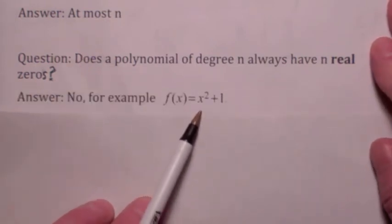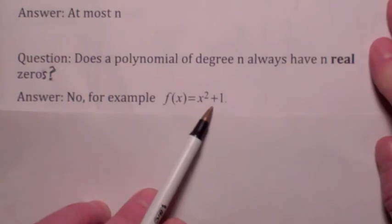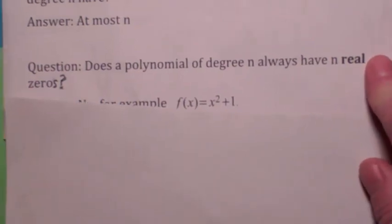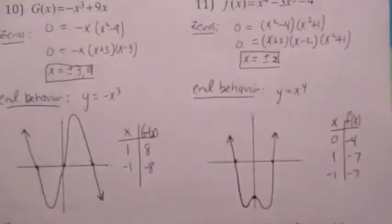Here is a good example. x squared plus 1, polynomial function of degree 2, there's no real zeros. Which means, in fact, that there's going to be no x-intercepts. No real zeros, no x-intercepts.